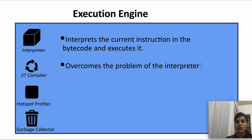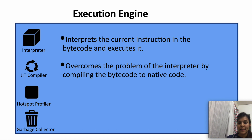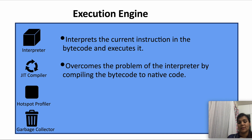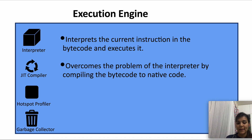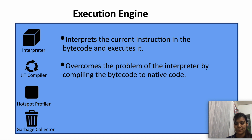The JIT compiler overcomes this problem by compiling the bytecode into native code. What the JIT compiler does is generate an intermediate code, then optimize this code, and then convert it into native code. The JIT compiler creates native code ready for methods that are executing multiple times, thereby increasing the speed of execution. Most of the time the JIT compiler and the interpreter work simultaneously.